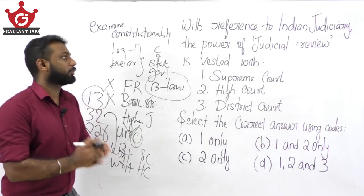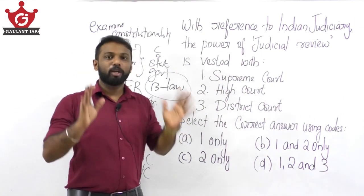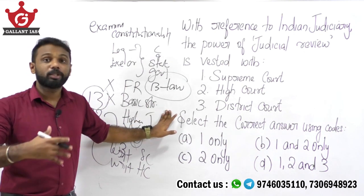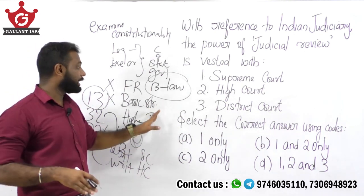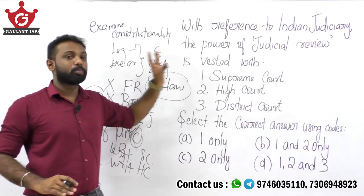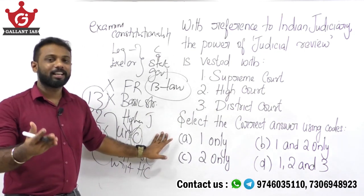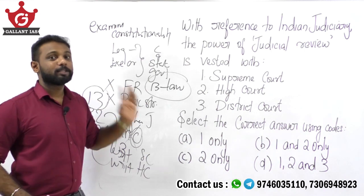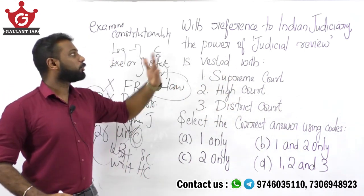So even though the term judicial review is not clearly mentioned in the Constitution, Articles 13, 32, and 226 confer this power on the Supreme Court and High Court. If a law is made inconsistent with or contrary to the fundamental rights, or violates the basic structure of the Constitution, then the Supreme Court or the High Court can declare that law or executive order unconstitutional. This power is vested only with the Supreme Court and High Court.